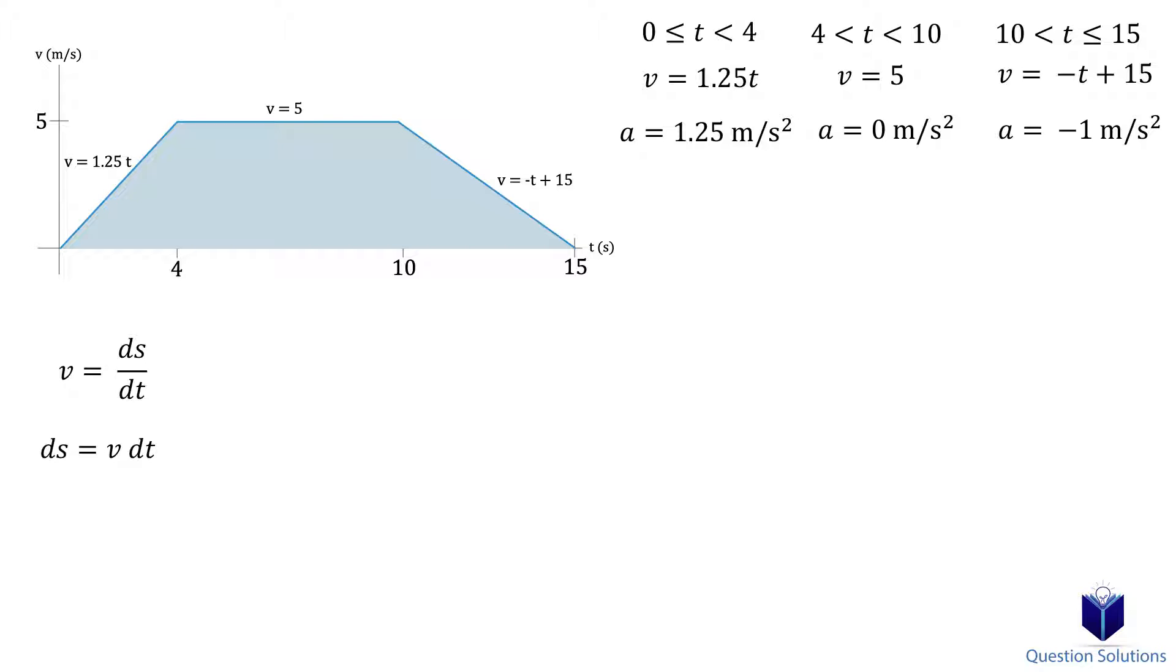To start, remember that the bike starts from rest at a time of 0, which will be our lower bounds for the integral. When we solve it, we get our displacement equation. Let's figure out the position of the bike at 4 seconds since we need it to integrate the next segment. At 4 seconds, the bike moved 10 meters.